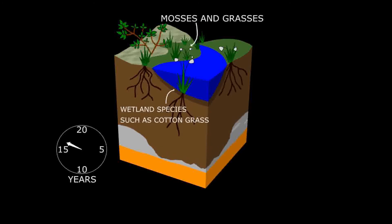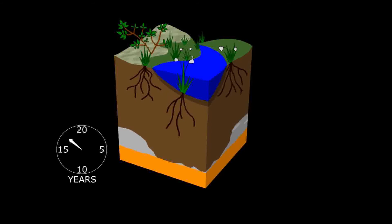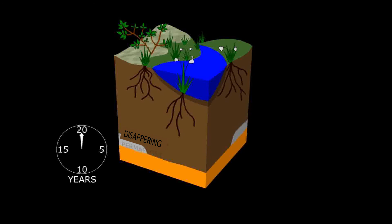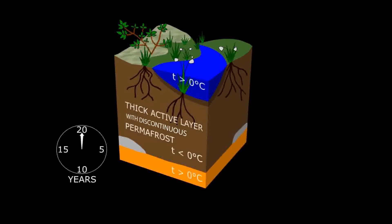As permafrost continues to thaw, its former continuous cover becomes broken and the permafrost is now called discontinuous as it only occurs in patches. Eventually, even these patches will thaw and there will be no permafrost in this area. In some areas of the Arctic that recently had continuous permafrost, we now have discontinuous permafrost, and in some areas at the edge of the Arctic where we had discontinuous permafrost, the permafrost has now gone.